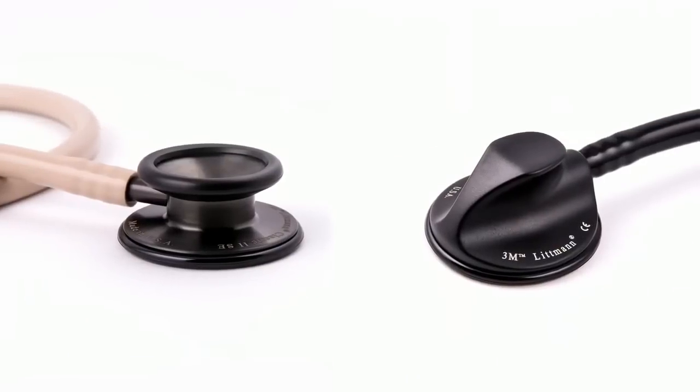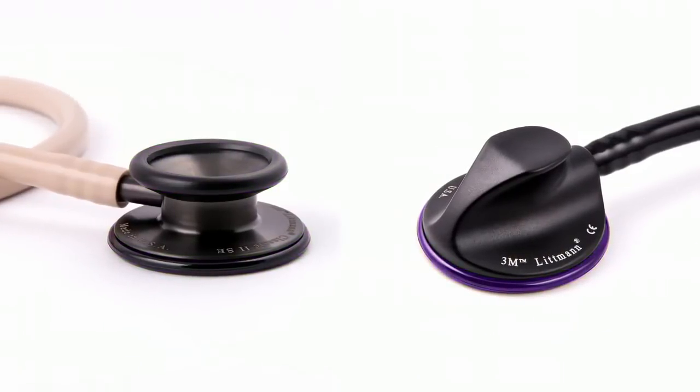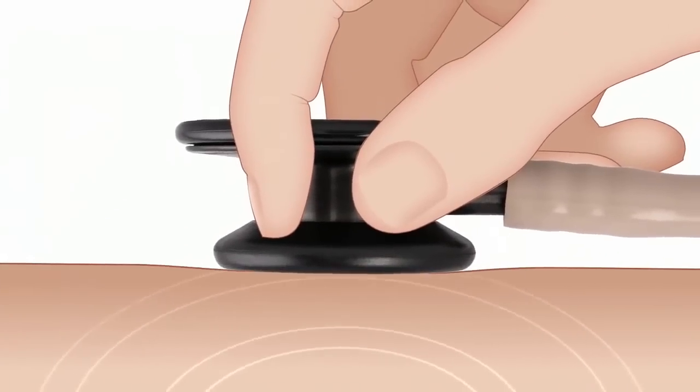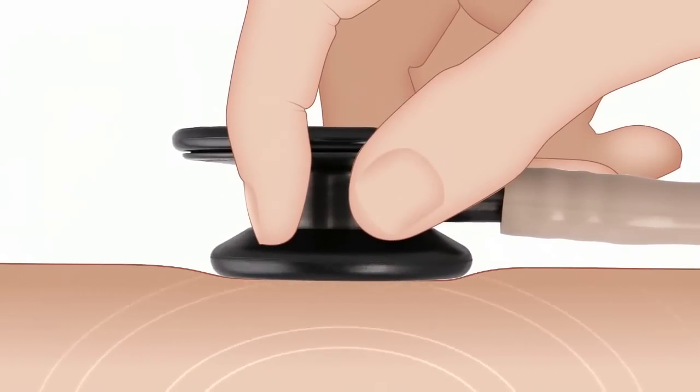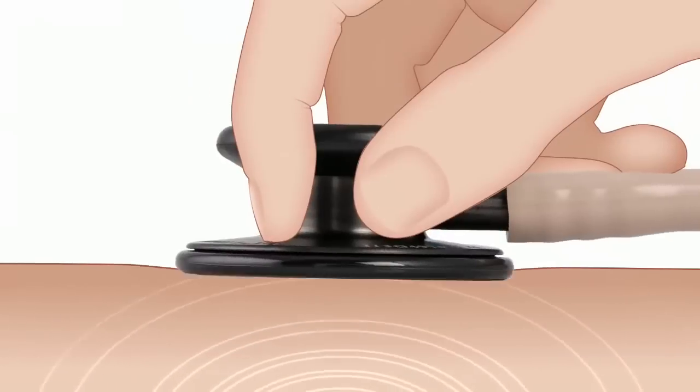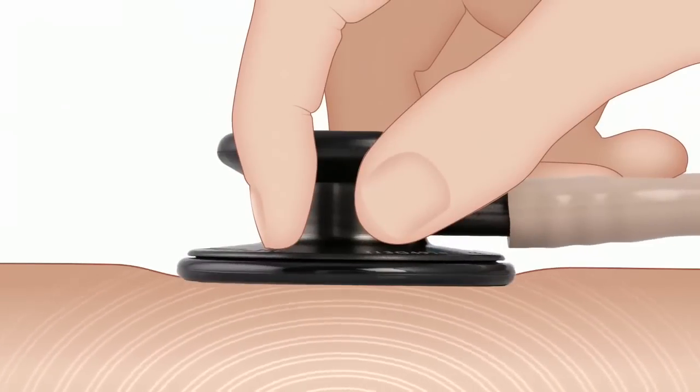There are two types of Littmann chest pieces: double-sided and single-sided. With the double-sided chest piece, use the open bell on the small side to listen to low-frequency sounds and the diaphragm on the large side for high-frequency sounds.